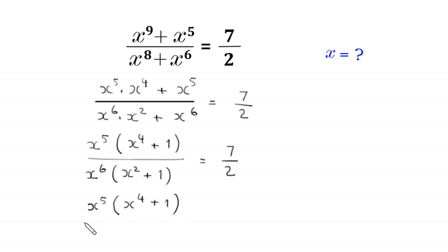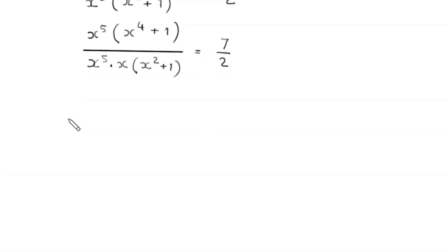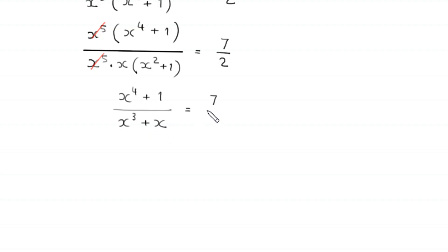We have x to the power 5 times (x to the power 4 plus 1) divided by x to the power 6 times (x squared plus 1), equal to 7 over 2. The x to the power 5 cancels, leaving (x to the power 4 plus 1) divided by x times (x squared plus 1). Expanding the denominator gives x cubed plus x, equal to 7 over 2.